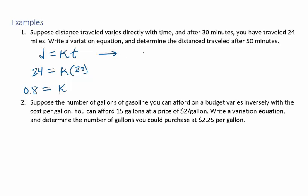Now, if we're asked to write the variation equation, here it is: d equals 0.8t. And lastly, we want to determine the distance traveled after 50 minutes. So 50 minutes is a time, and we have our formula, so we substitute 50 for t. That gives us 40 miles.